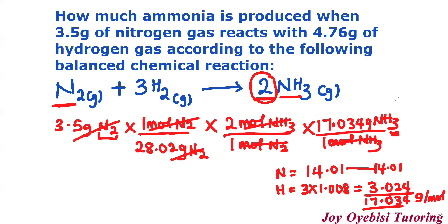So the next step is to calculate: you have 3.5 times 1 times 2 times 17.034, divided by 28.02. This gives us approximately 4.26 grams of ammonia. So we're done with this one.